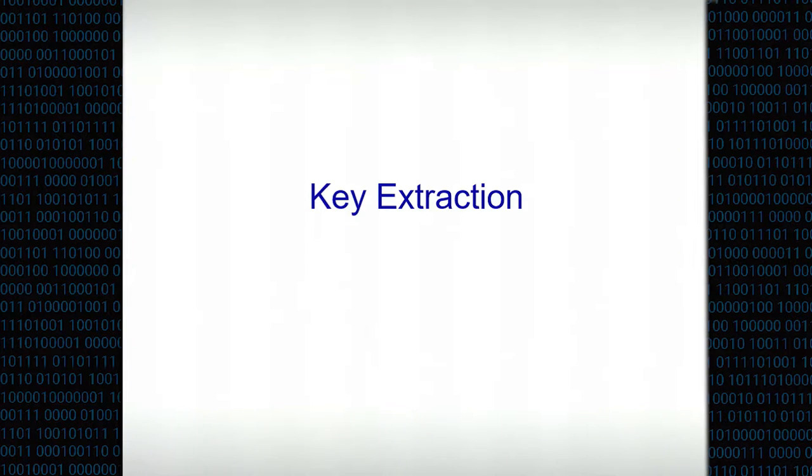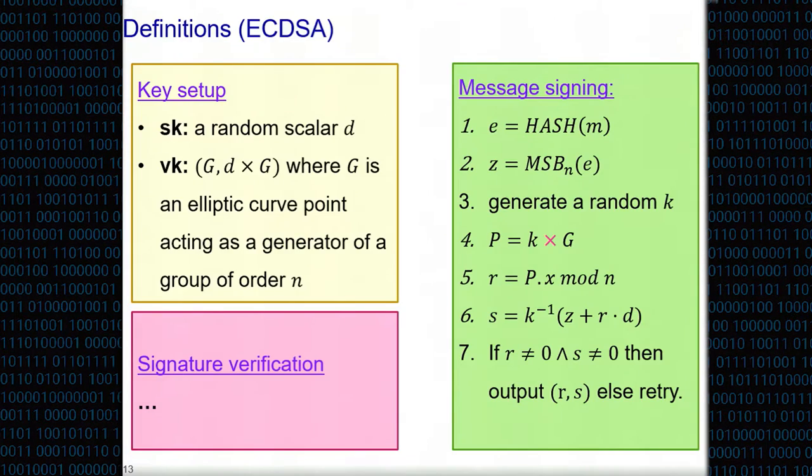Moreover, as we'll see, even partial information about k, very partial information, would be enough to break the signatures. Let's proceed to key extraction. What we're going to attack is this scalar by point multiplication, which is the only thing that is slow enough for me to actually measure. For that, I need to discuss how this thing is implemented. First, data structures.